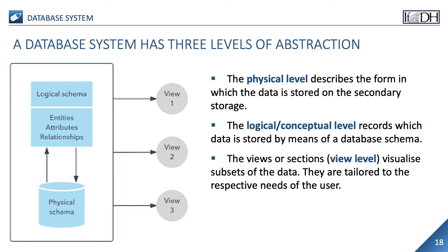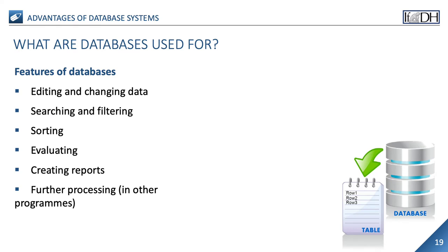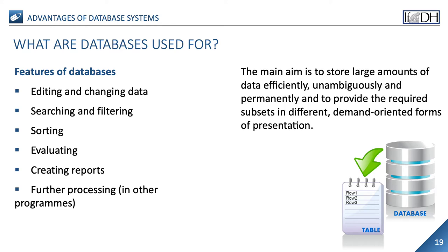A database system has three levels of abstraction. The physical level describes the form in which the data is stored on the secondary storage. The logical or conceptual level records which data is stored by means of a database schema. The views or sections visualize subsets of the data tailored to the respective needs of the user. The main task is to record the data in a structured way, including editing, searching, filtering and sorting it in order to evaluate it. This evaluation can be produced in the form of reports and exported to other programs. It is therefore primarily a matter of storing large amounts of data efficiently, unambiguously and permanently, and providing the required subsets in various forms of presentation.